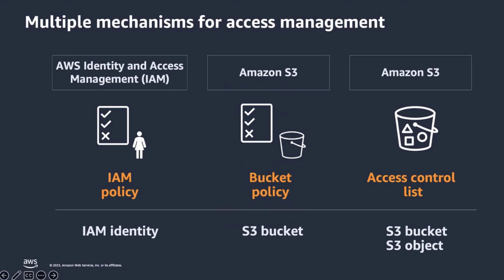Now that you know how to prevent public access to your S3 resources, let's talk about how you can configure access management suited to your needs. Amazon S3 provides multiple mechanisms for access management: IAM policies apply to IAM users and roles; S3 bucket policies apply to S3 buckets; and S3 access control lists apply to S3 buckets and S3 objects. ACLs predate AWS Identity and Access Management — it's the legacy method to manage cross-account access to S3 resources. The majority of use cases no longer require ACLs, and we advise that you disable them to simplify permissions management and auditing.